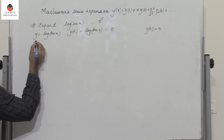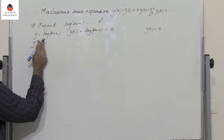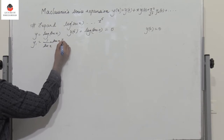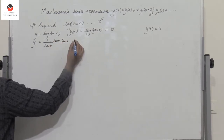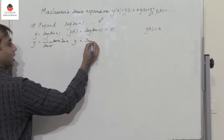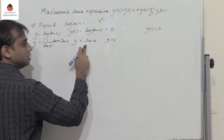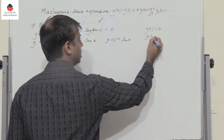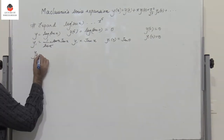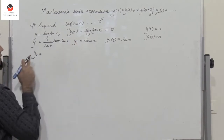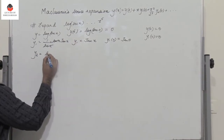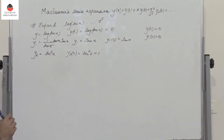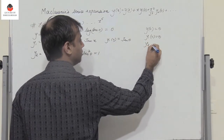Now y₁ = d/dx[log(sec x)] = (1/sec x) · sec x · tan x = tan x. So y₁(0) = tan(0) = 0. Differentiating y₁: y₂ = sec²x. So y₂(0) = sec²(0) = 1. This is the first non-zero value.